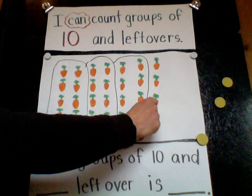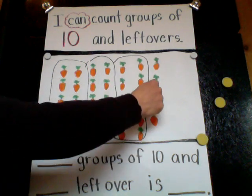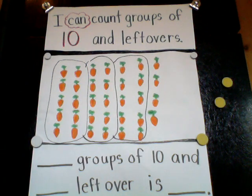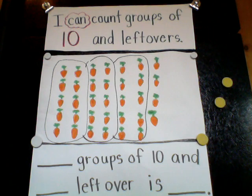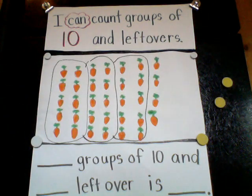One, two, three, four. Four carrots do not make a group of ten, so we can consider those leftovers are ones.